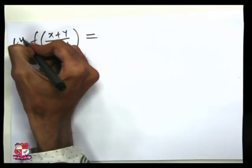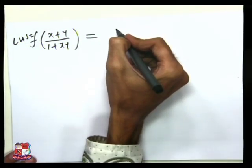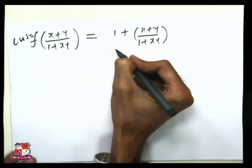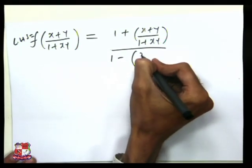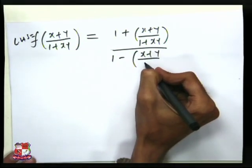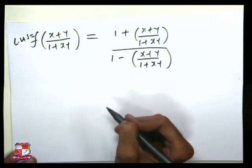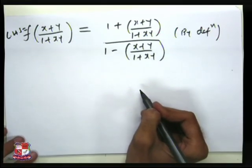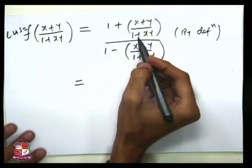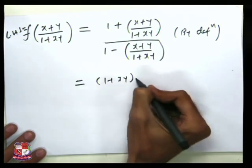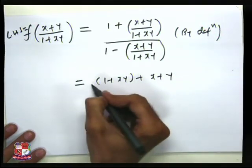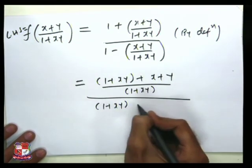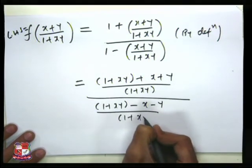So we will get the left hand side equal to 1 + (x+y)/(1+xy) upon 1 - (x+y)/(1+xy). By taking LCM and simplifying, we get (1+xy+x+y)/(1+xy) upon (1+xy-x-y)/(1+xy).